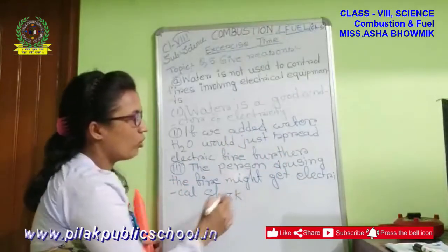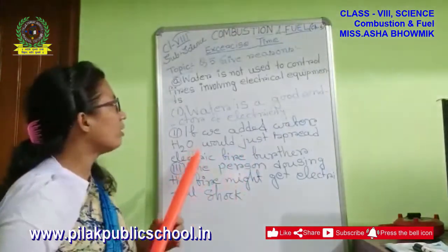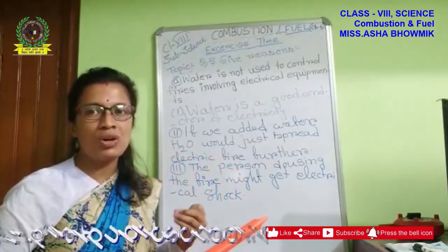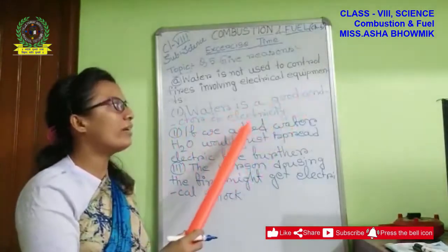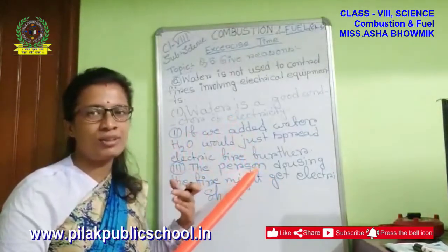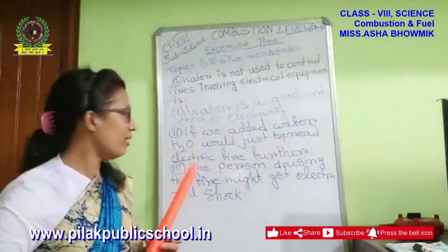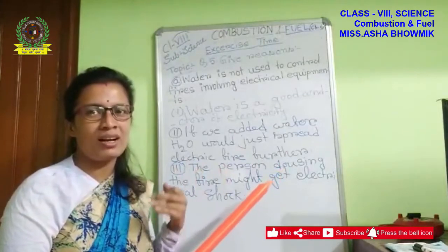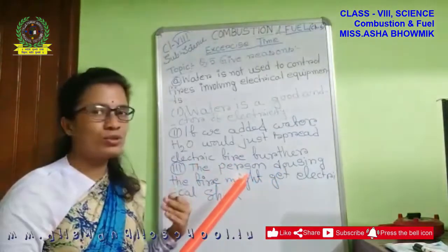Dousing means to soak — S-O-A-K. Now I say again: why can we not use water as a material to control electrical fire? First point: water is a good conductor of electricity, which helps to convey electricity — conductor means to support, carry, or transport electricity. Second point: if we add water to an electrical fire, water would just spread the electric fire further — it helps increase, not stop, the burning of electrical equipment. Due to this, we cannot use water to control electrical fire.